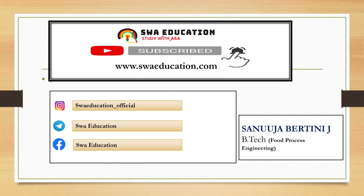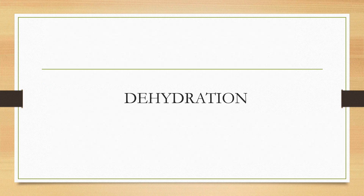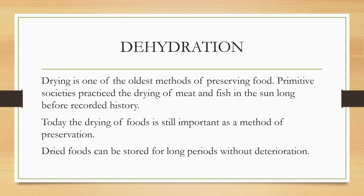Welcome to today's class. We're going to learn about dehydration, which is a processing method or preservation method in food processing. Dehydration is nothing but the removal of water, or you can term it as drying of a food product. When you dry a food product, the water content is removed — the water activity can be made very low so that microorganisms will find it difficult to grow in such low moisture content.